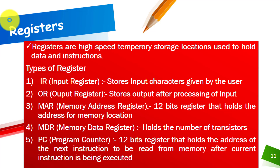Next we have registers. Registers are high-speed temporary storage locations used to hold data and instructions. The first type is the IR, or Input Register. As evident from its name, it stores input characters given by the user. For example, if you enter a name like 'chair', the characters C, H, A, I, R are stored in the input register. If you type 'my name is Michael', that whole sentence is stored in the IR input register.